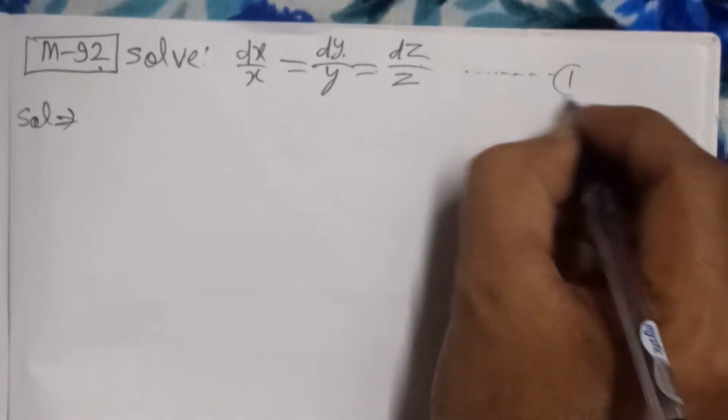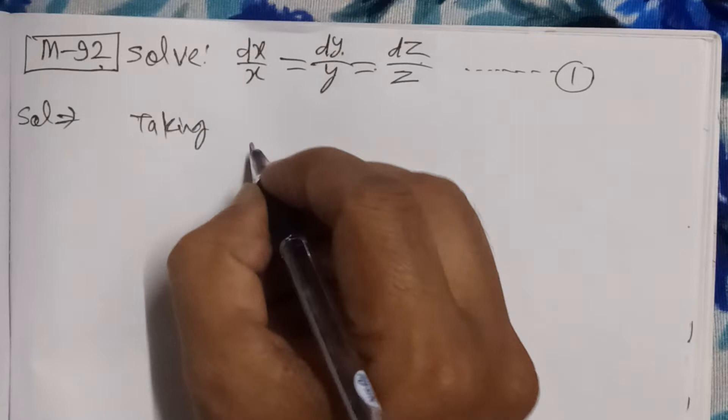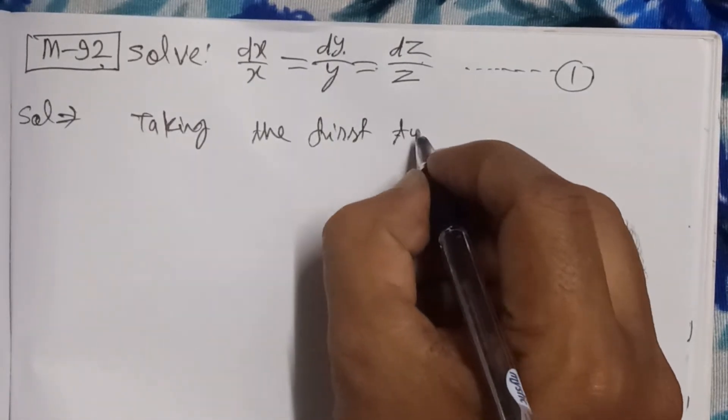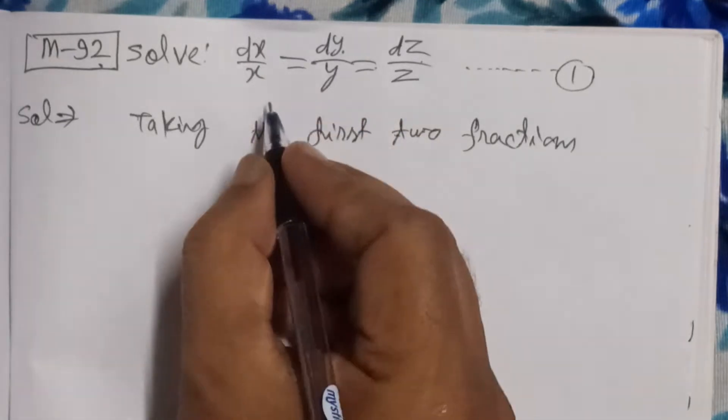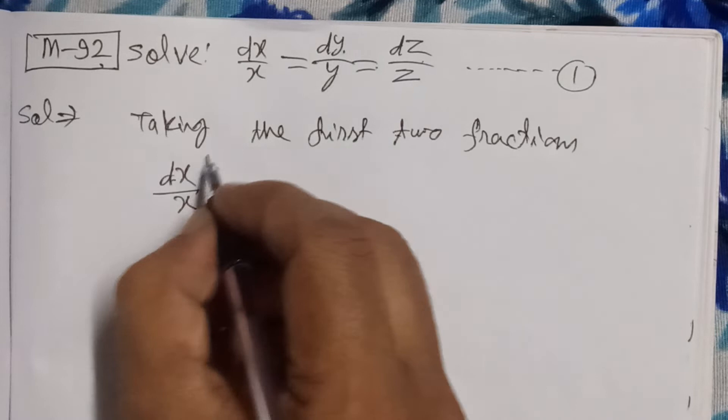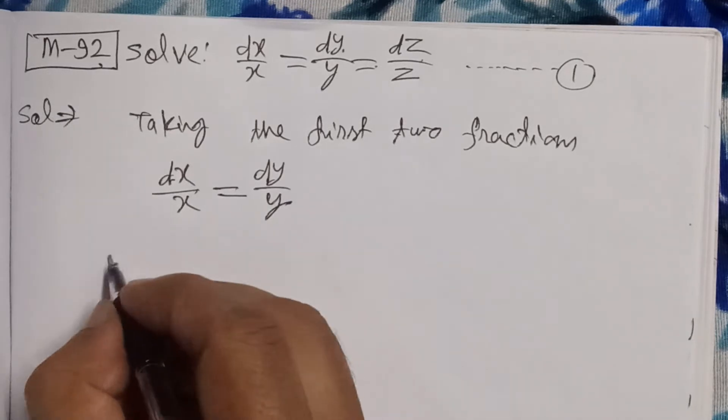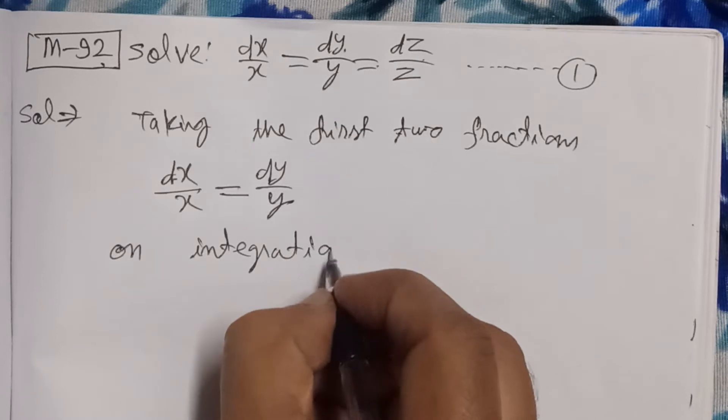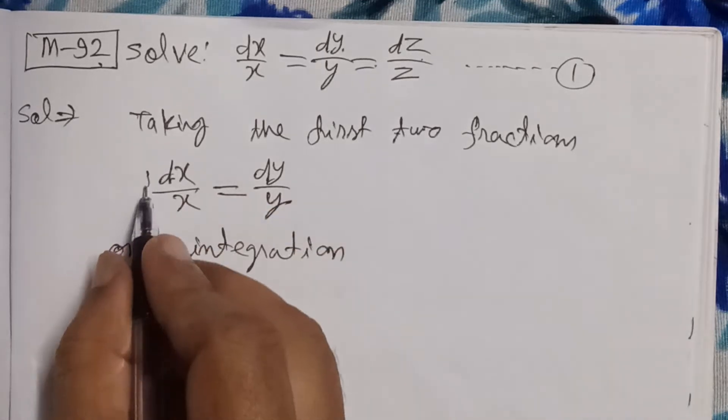This is equation number one. Taking the first two fractions, which are equal, I write dx/x = dy/y. For solving it, on integration, we can take 1 as numerator and x as denominator, because 1 multiplied by dx equals dx. So we integrate 1/x with respect to x.